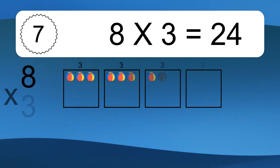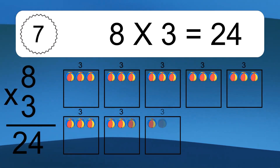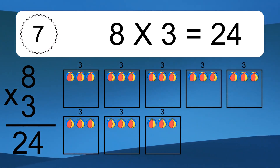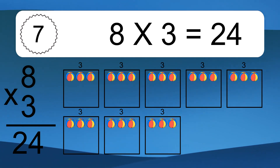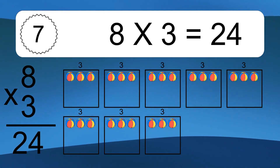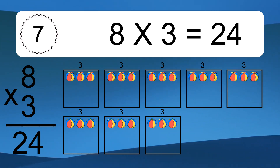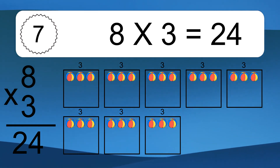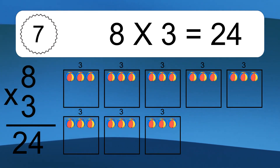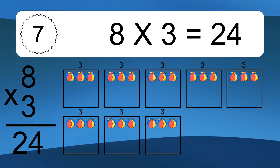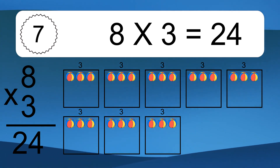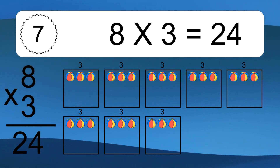8 times 3 equals 24. We have 8 boxes and each box has 3 colorful balls inside. If you count all the balls in all the boxes together, you will have 8 times 3 balls. This equals 24 balls.